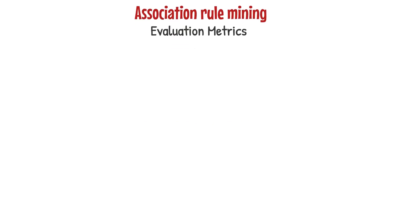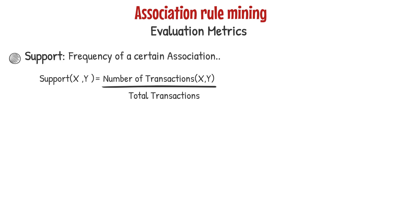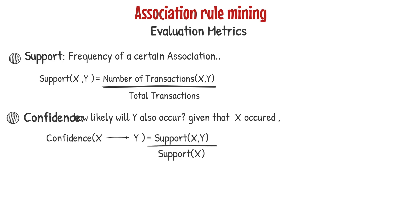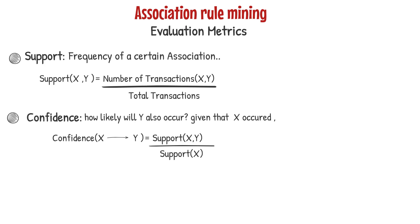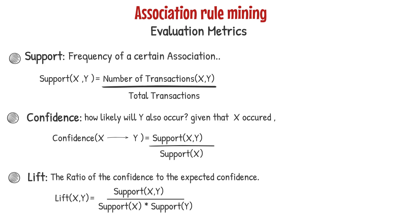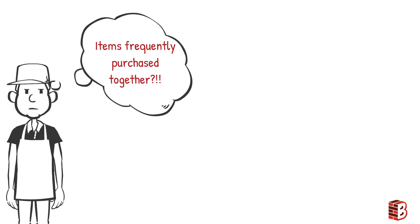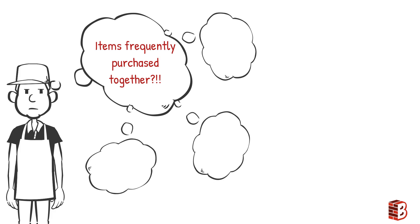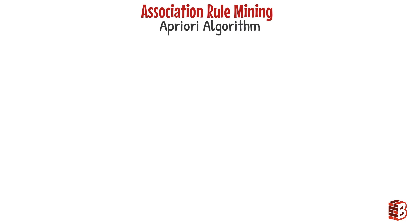Summarizing what we have covered so far, we mentioned three metrics to evaluate the importance of an association. Support answers the question: how popular is our association? Confidence answers the question: how likely will event Y occur given that event X already occurred? Lift answers the question: how confident are we about the association rule beyond what we would expect just by random chance? Now, the grocery store manager can determine specific requirements: support of at least 50%, confidence of at least 80%, and Lift greater than 1. To achieve these requirements, we will use the A Priori algorithm.